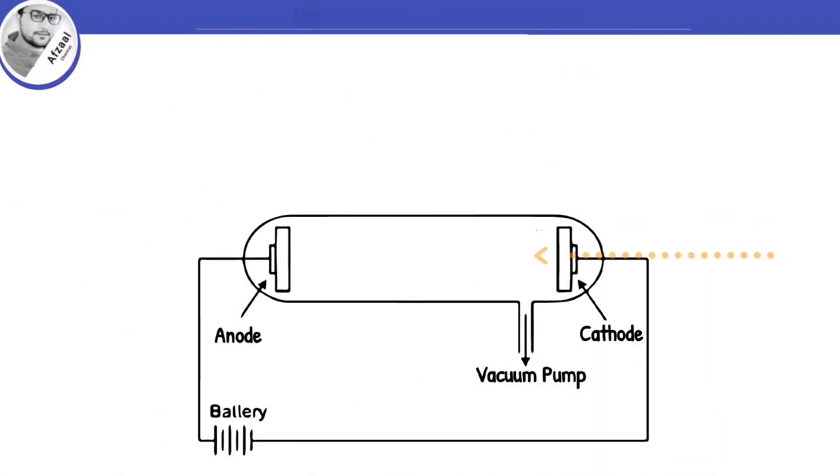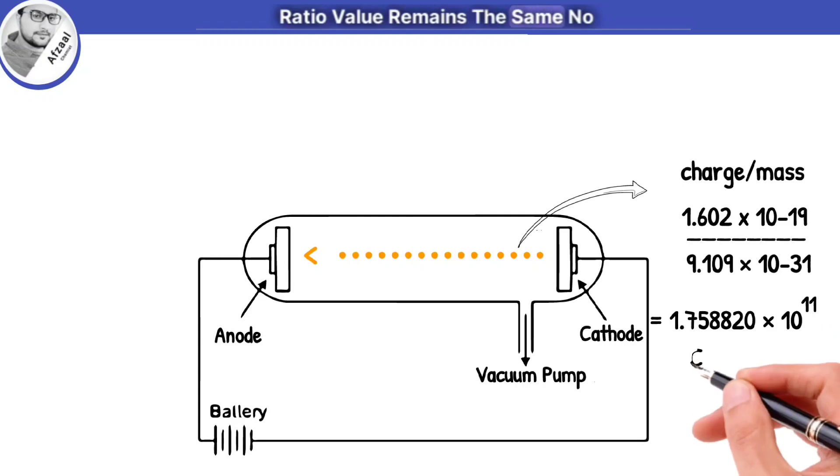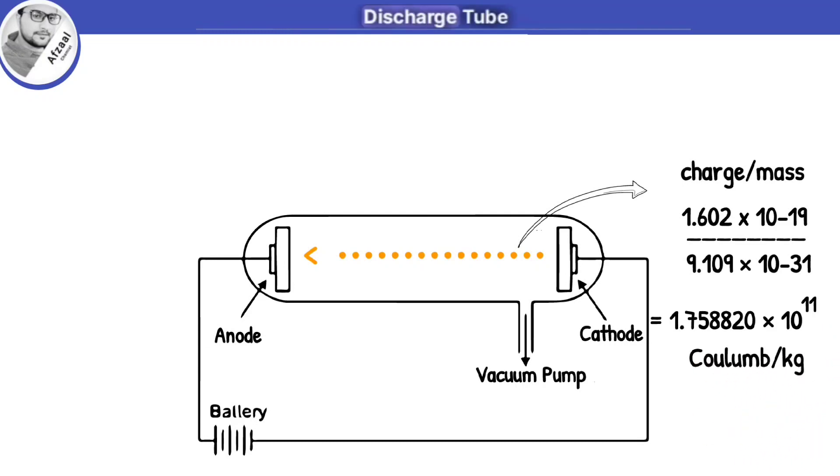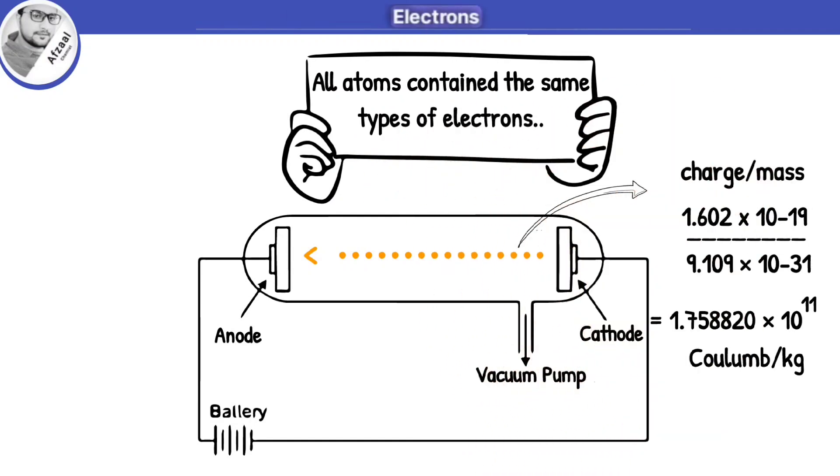Thomson didn't stop there. He also measured the ratio of charge to mass of these particles. He found that the charge to mass ratio value remained the same no matter which gas was used in the discharge tube. He concluded that all atoms contained the same types of electrons.